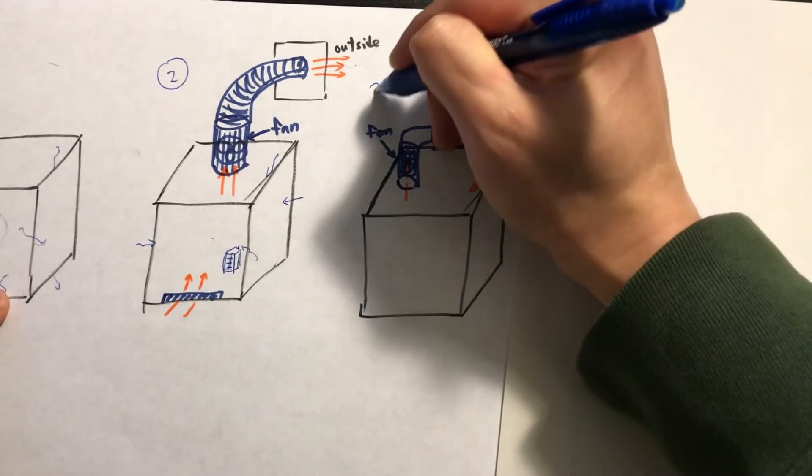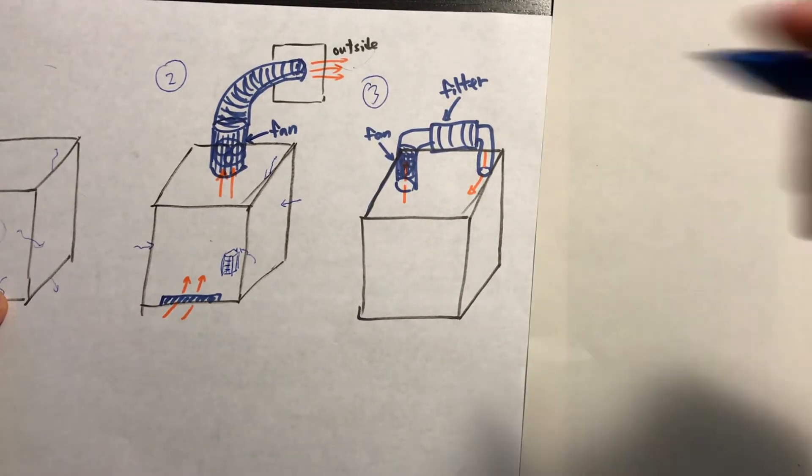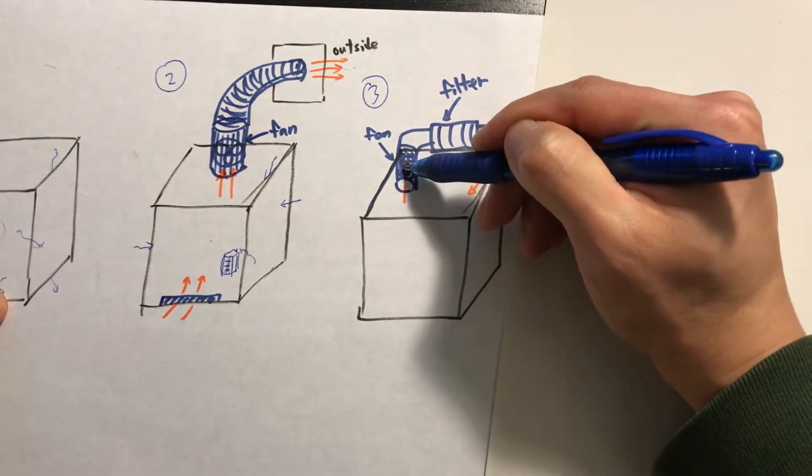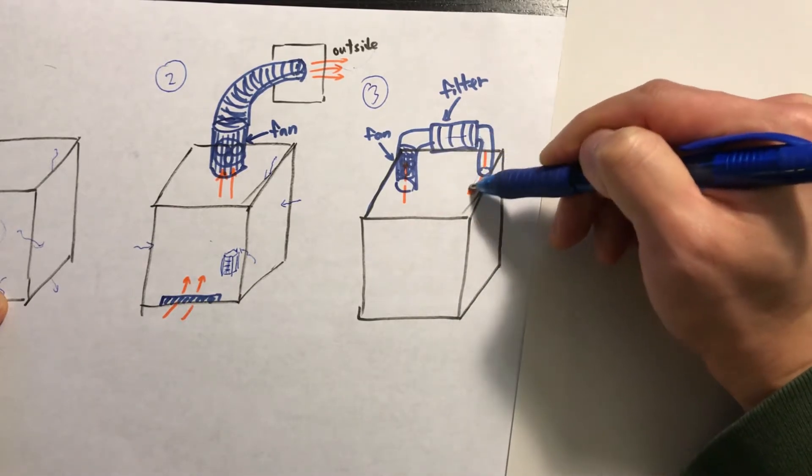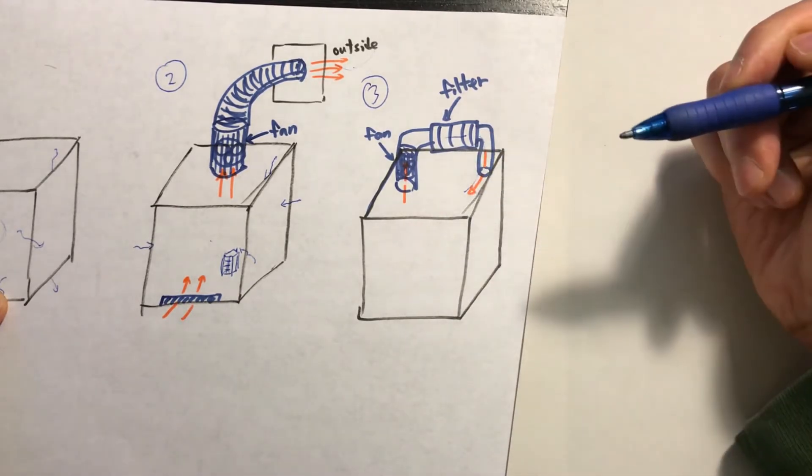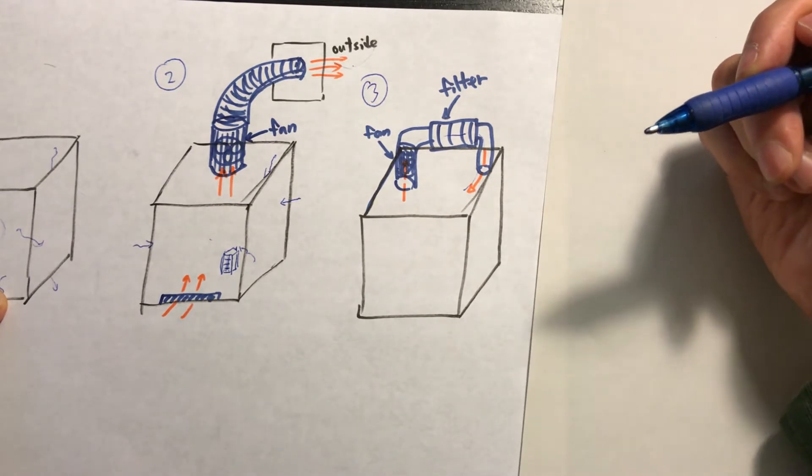The third design has a kind of closed-loop filtering system. This design has a fan that pulls the air out of the enclosure and the air goes through the filter, then it will be re-supplied to the enclosure.